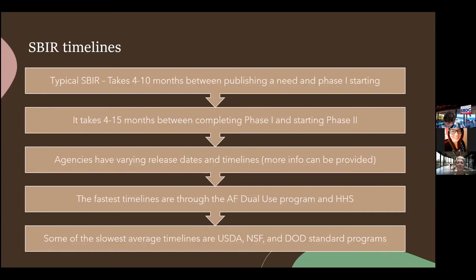A lot of agencies are trying to pilot programs to shorten timelines. Air Force is probably the biggest one. SOCOM is now piloting a new program — Lisa Saunders, the head of S&T for SOCOM, is going to educate us on her pilot that she got approved, which has significantly cut down on the amount of time. For SBIRs to be valuable for small business, these timelines have got to be cut down. As it stands, it can take up to 10 months for phase one, then up to 15 months between completing phase one and starting phase two — meaning small businesses can face up to 25 months from published phase one to starting phase two. That is an unbelievable amount of time.